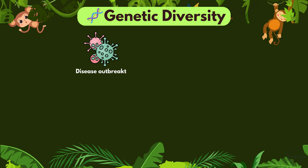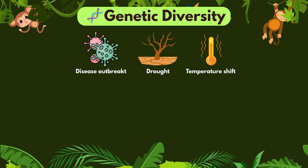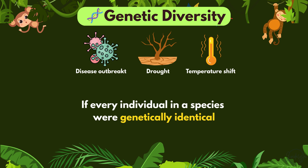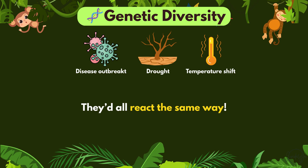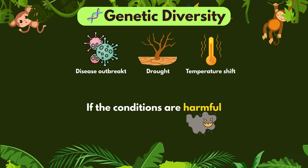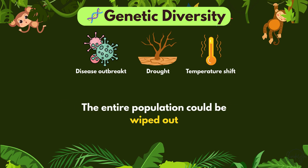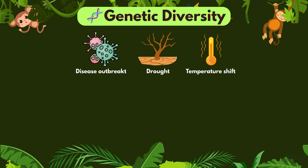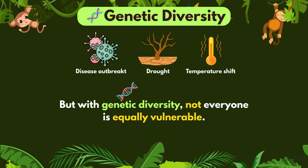Let's say there's a sudden disease outbreak, a drought, or a temperature shift. If every individual in a species were genetically identical, they'd all react the same way. If the conditions are harmful, the entire population could be wiped out. But with genetic diversity, not everyone is equally vulnerable.